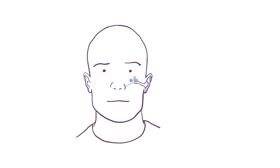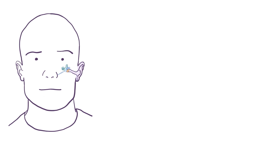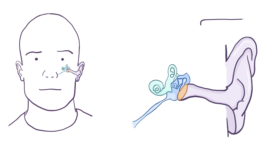The ear can be broken down into three sections. The first is the outer ear, which is the part you see, called the pinna, as well as the ear canal.